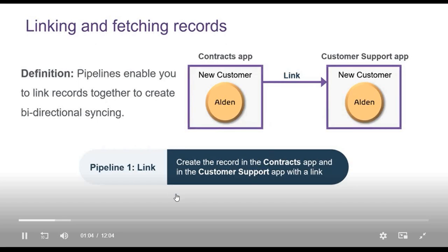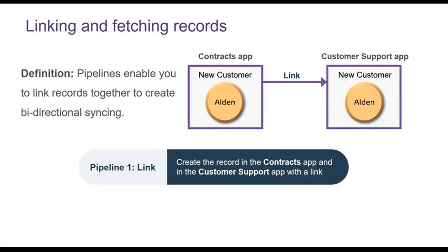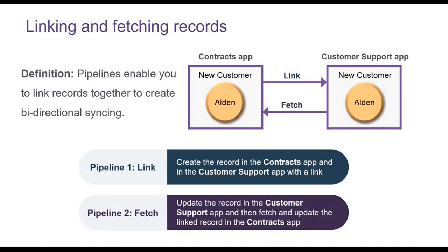That same customer is also added to the Customer Support app, and the two records are linked together. You can then use that link in other pipelines. In the second pipeline, when the customer information is updated in the Customer Support app, the pipeline fetches the linked record in the Contracts app and updates it as well. By linking records, you can fetch the exact record without having to set up a search step.